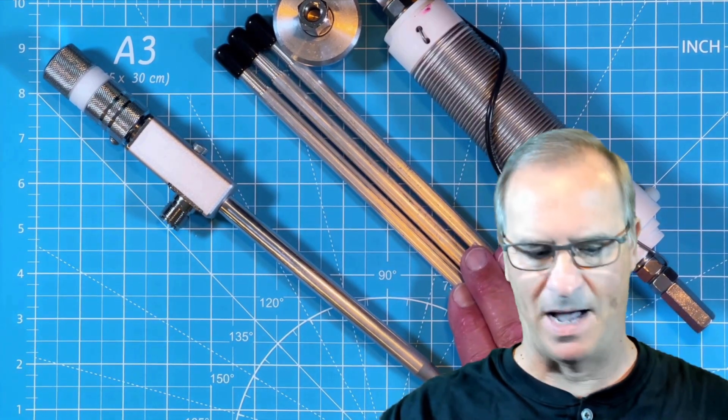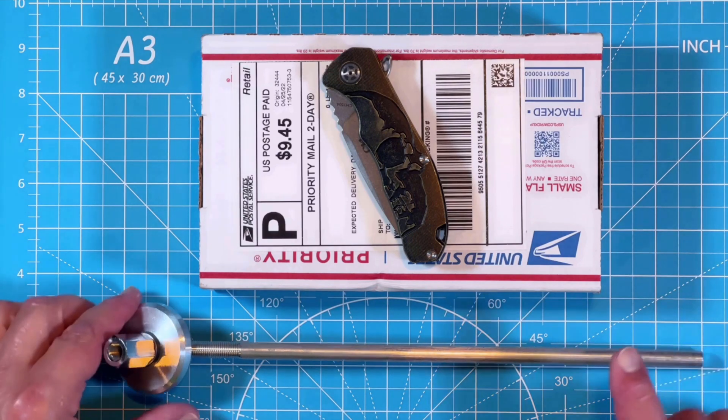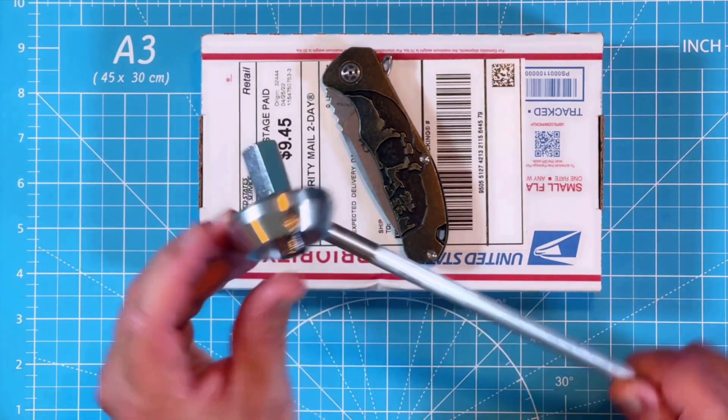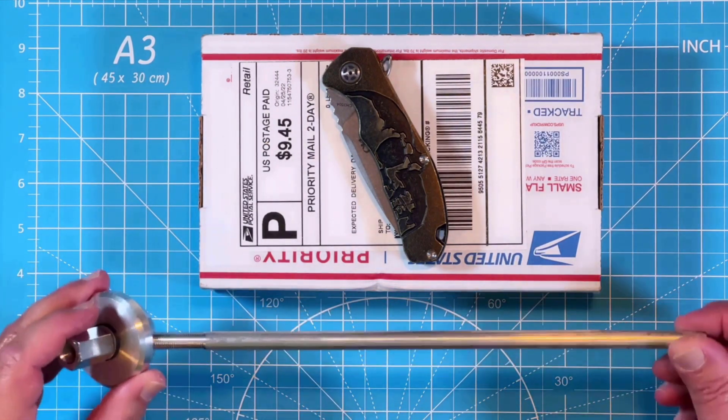For those of you not familiar with Wolf River Coils, first of all they're fantastic products. Second of all, what you're looking at is only one leg of the three-legged tripod. This hub has two more holes to receive the two additional legs. For illustration purposes I'm only going to show one leg today in my video.